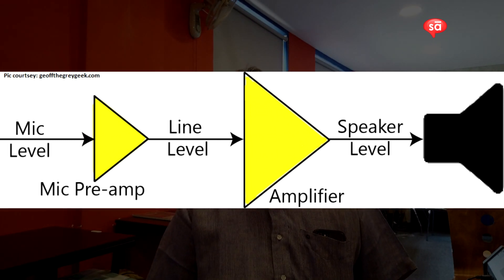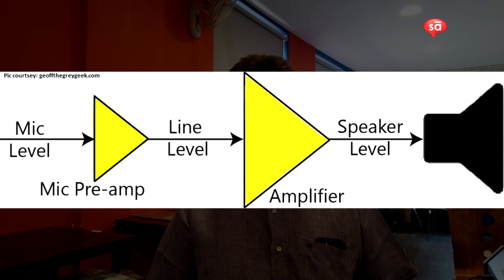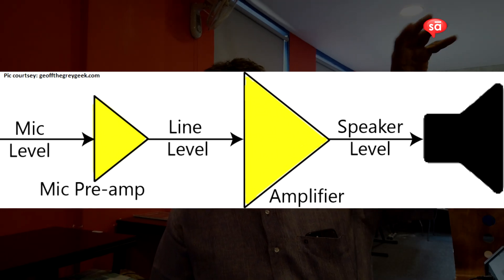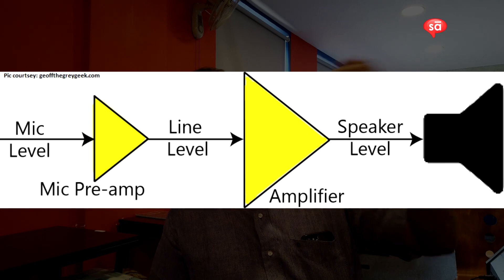And the fourth one is the speaker level. Speaker level is something which comes from the amplifier to the speaker. These are the four types of signal levels in audio.